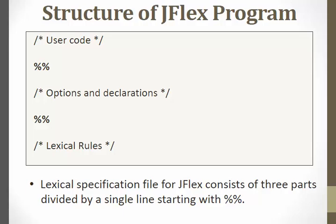This tutorial is a basic introduction on how to get started with JFlex. The structure of a JFlex program has three divisions: user code, options and declarations, and lexical rules, separated by two percent signs. In the user code section you write import statements, just like in Java. In options and declarations you put the actual Java code and macro definitions. In the third part, lexical rules, you put the rules and the actions associated with them.